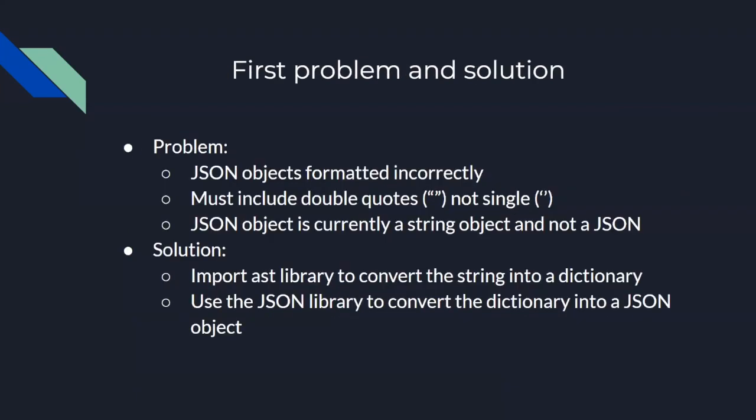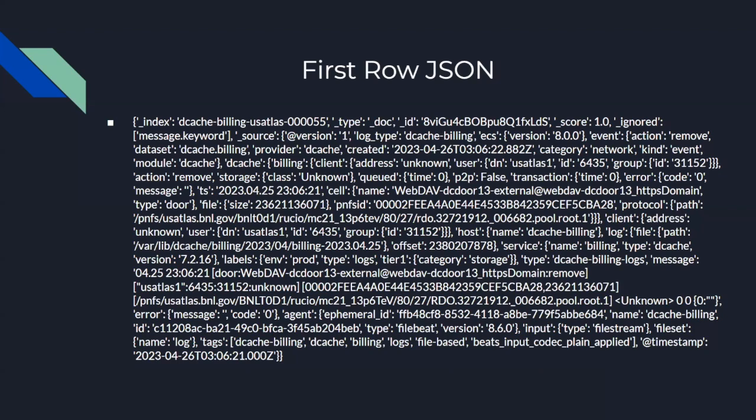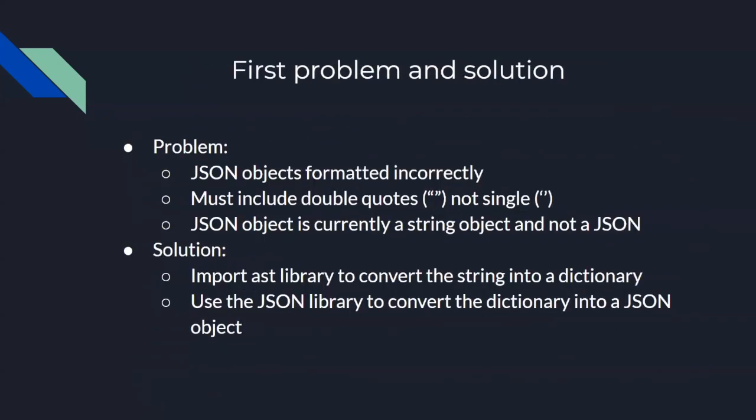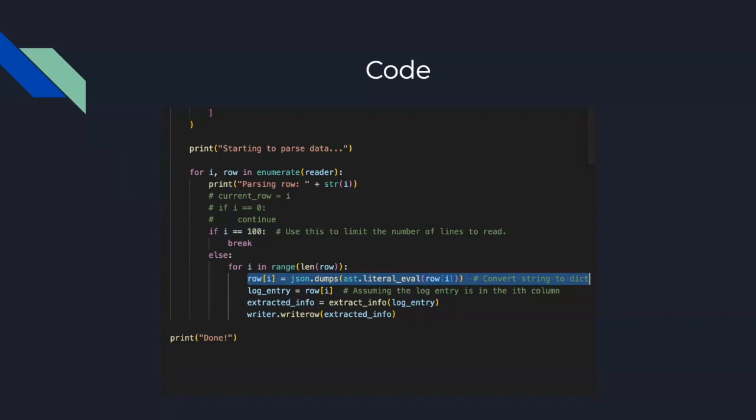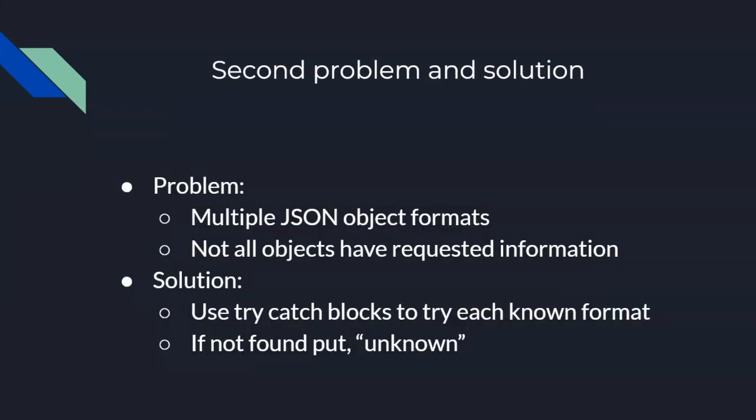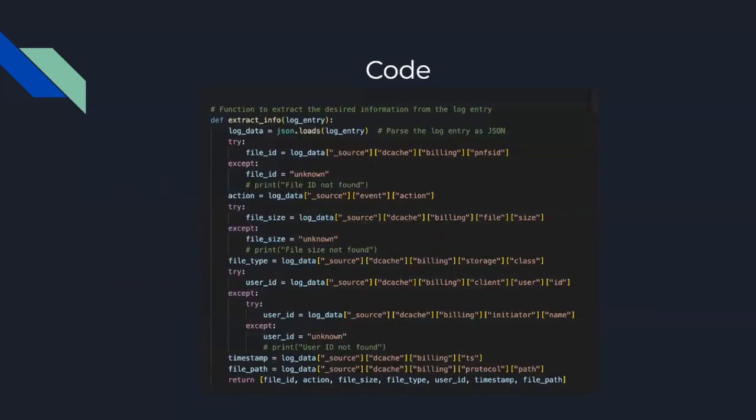So some format examples, I'm not going to spend a lot of time on these, but you can see that these are all different ones. And that kind of makes it difficult. So the first problem is that they're formatted incorrectly in this case. So when you're parsing through JSON objects, you want there to be double quotes and not single quotes. And as you can see here, and a lot of these cases, you have single quotes instead of double quotes. And so that's something we have to fix. And so a solution to that is basically to import an AST library and use the JSON library as well to convert it from a string to a dictionary and then from a dictionary to a JSON object. And you can see the code here does exactly that.